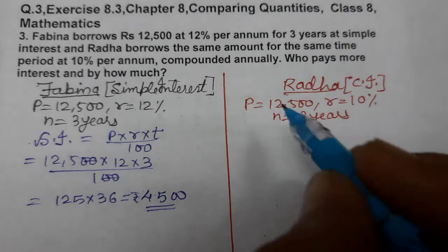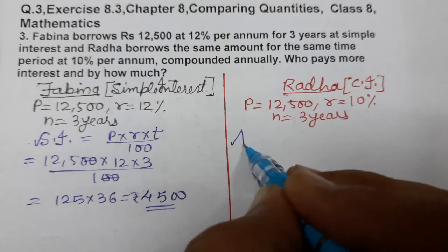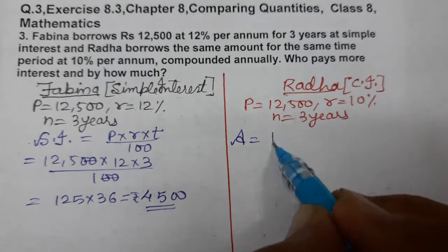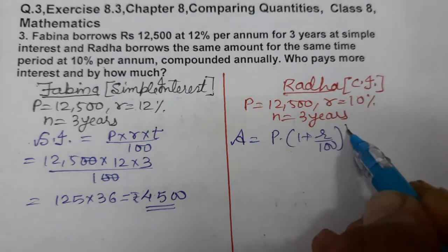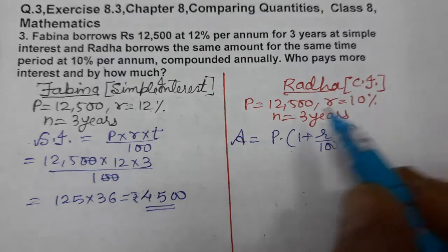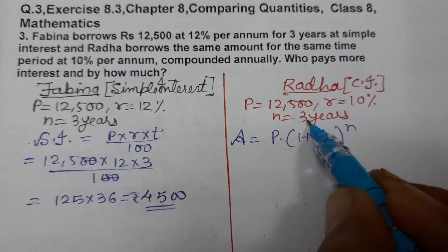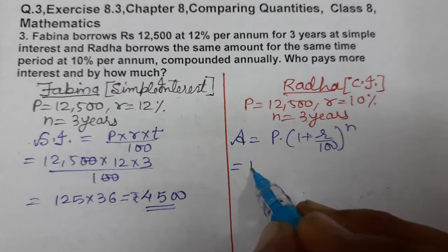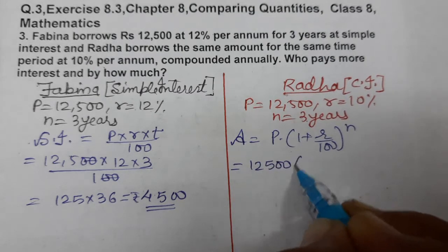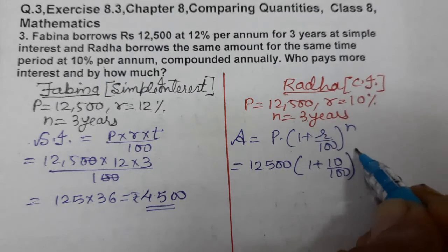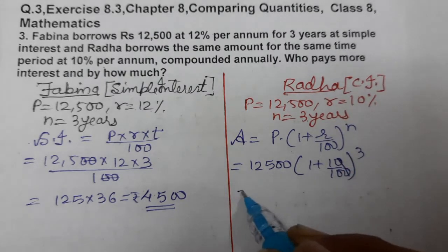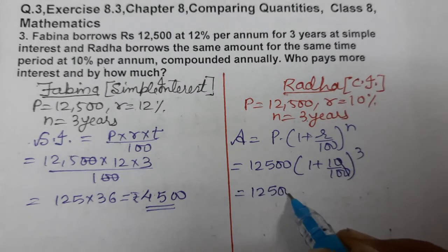Now let's find Radha's interest. Amount equals P(1 + R/100)^n. It's compounded annually, so no changes. Principal is 12,500, rate is 10, 10/100 raised to the power n. N is 3. Cancel zeros: 12,500 × (11/10)^3.